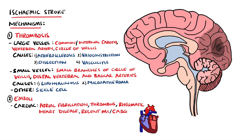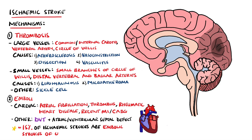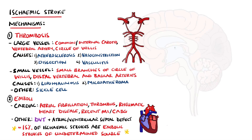Emboli may also travel from sources such as a deep vein thrombosis, and if the patient has a shunt present — such as an atrial or ventricular septal defect — then this venous embolus can move into the arterial circulation and potentially generate a stroke. Around 30–40% of ischemic strokes are deemed cryptogenic, meaning no clear cause was found. A subtype of these are embolic strokes of undetermined source, estimated to be around 15% of all ischemic strokes.